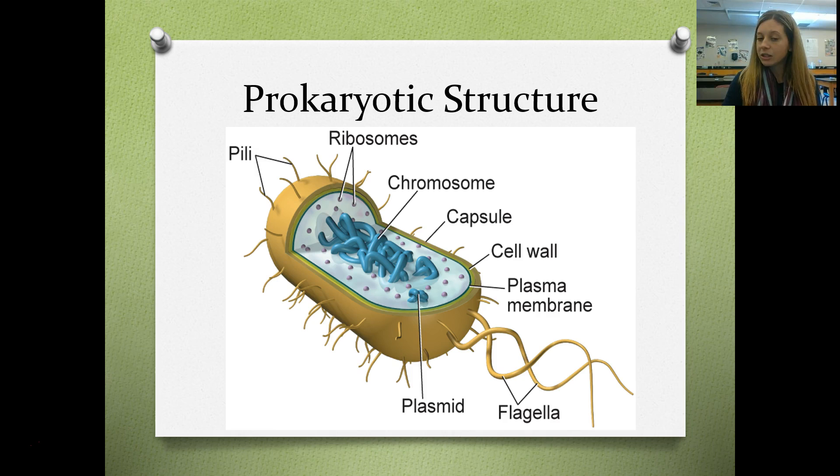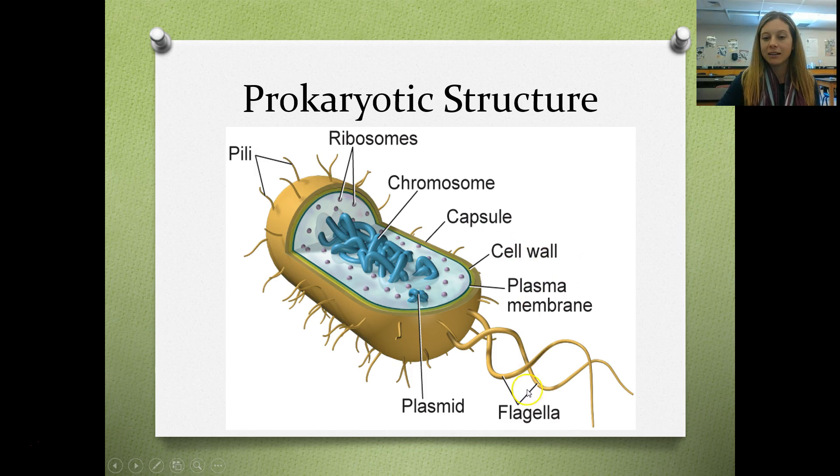Let's review the structure of a prokaryotic cell. Parts you should label on your diagram include pili, ribosomes, chromosome or genetic material, the capsule — not to be confused with the capsid of a virus — the cell wall, the cell membrane, the flagella, and plasmids, which are circular forms of genetic material that only bacteria have.